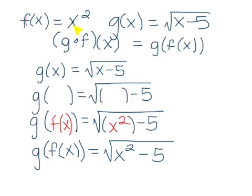Here f of x is given as x squared and g of x is given as square root of x minus 5, so we want to find the composition g of f.